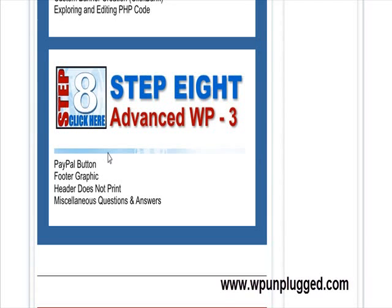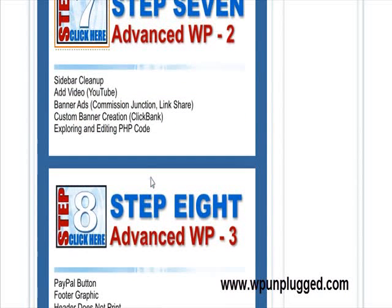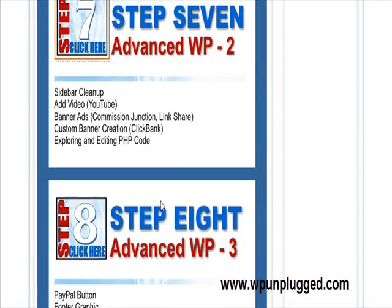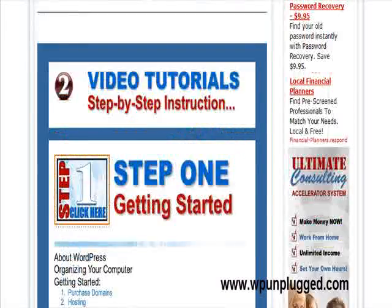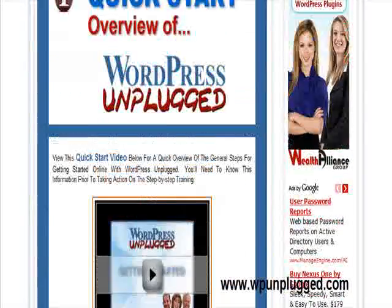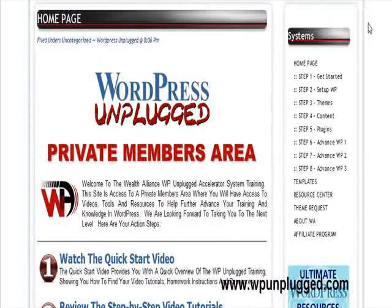In step eight, we clean up a lot of this stuff. We go through PayPal buttons, footer graphics, and have some questions and answers. We do a lot of miscellaneous here — some site evaluations of students who sent stuff in live. So that's kind of the whole process where we go from start to finish, A to Z, through WordPress. Let me go ahead and pop into one of the actual sections to show you real quick how this is laid out.